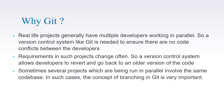Why do we need Git? As I mentioned previously, if there is a big code base with any crash, there is no way to trace, revert, or fix it without a version control system. Real life projects generally have multiple developers working in parallel, so a version control system like Git is needed to ensure there are no conflicts between developers. Requirements in such projects change often, so a version control system allows developers to revert and go back to an older version of the code. You can also get a full history of all the changes that have gone into the code base.